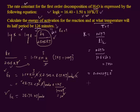Writing this in scientific notation, we move the decimal after 9, giving 9.2 × 10⁻⁵ per second. This is the rate constant of the reaction.